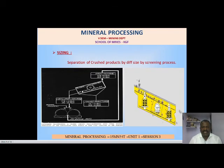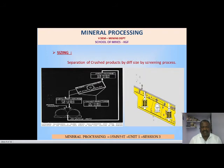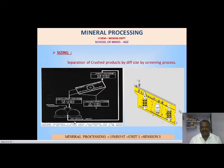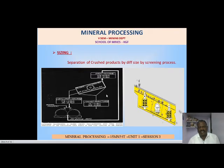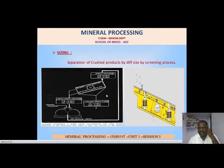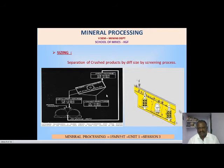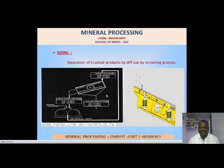The oversize material is recycled back to the crusher. From here, 20 to 30 percent of the screen output is removed as gangue material — rejected as waste.